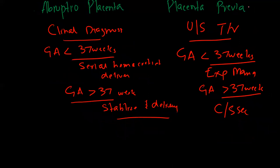To make the diagnosis of placenta previa, perform an ultrasound — transvaginal ultrasound is more sensitive. For treatment: if gestational age is less than 37 weeks with minimal bleeding, perform expectant management. If gestational age is more than 37 weeks with profuse bleeding, deliver the fetus via c-section.